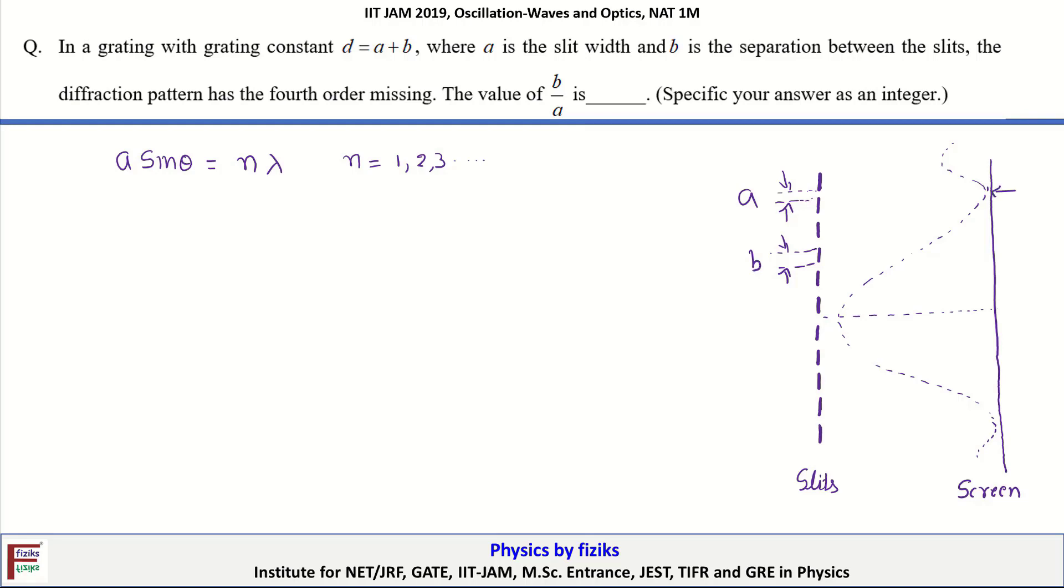For example, this is the first minima location, so here the value of n will be 1. Similarly, we can look for the n equals 2 and n equals 3 or higher order minimas.